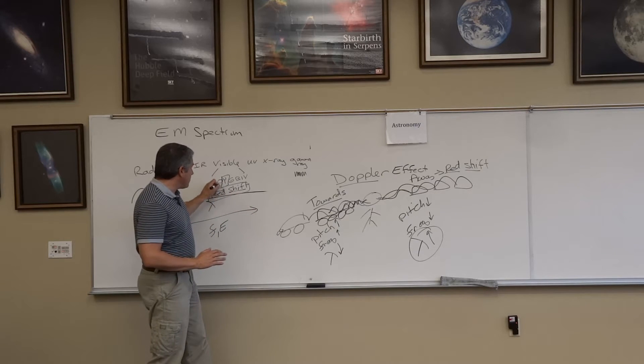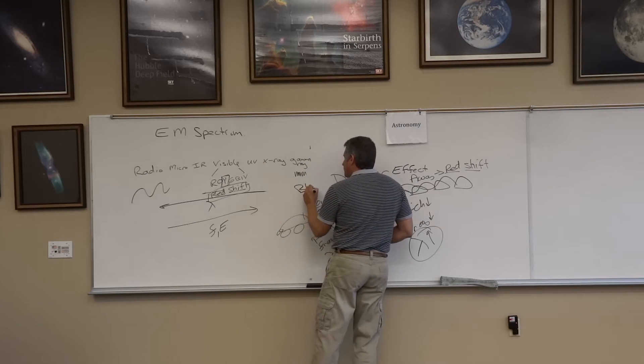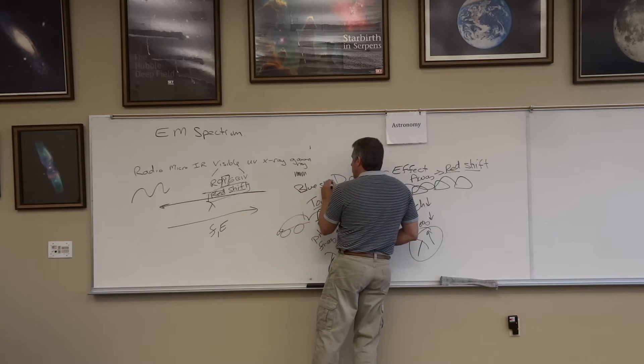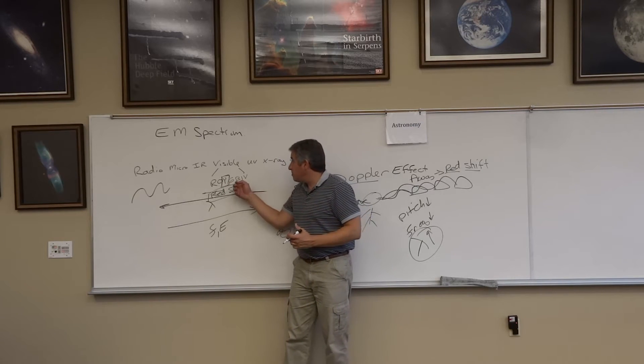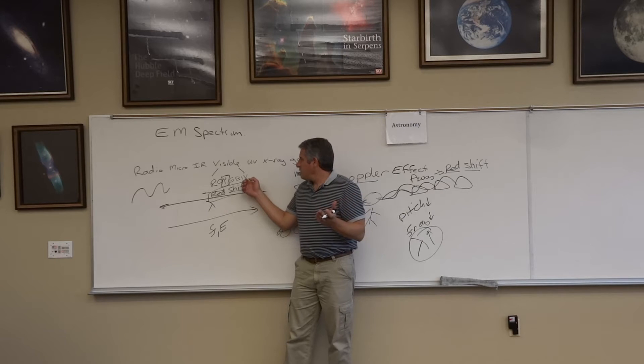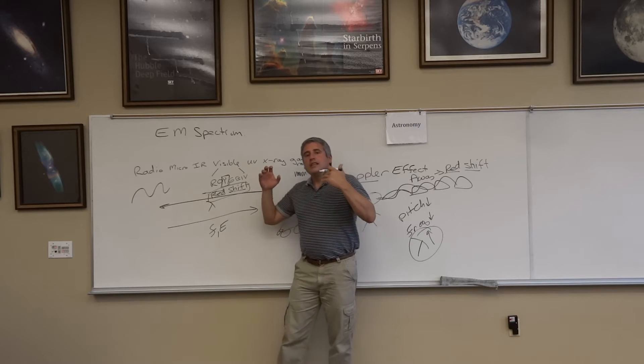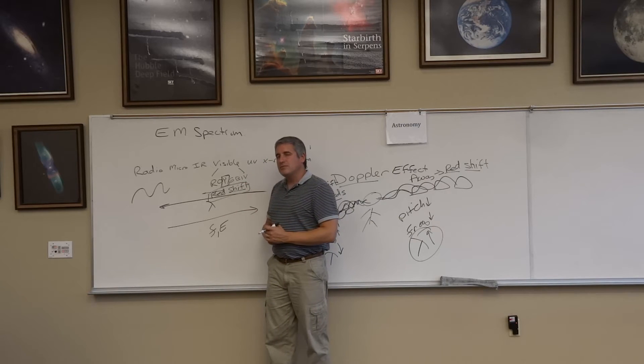That's considered to be a blueshift. Even if a star moves from yellow to blue, that's a blueshift. But blue to ultraviolet, that's a blueshift. Ultraviolet to x-ray, that's a blueshift. Any time you move towards shorter wavelengths, it's considered a blueshift.